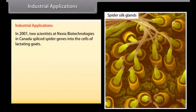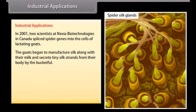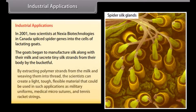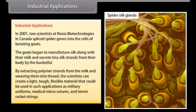In 2001, two scientists at Nexia Biotechnologies in Canada spliced spider genes into the cells of lactating goats. The goats began to manufacture silk along with their milk and secrete tiny silk strands. By extracting polymer strands from the milk and weaving them into thread, the scientists created a light, tough, flexible material that could be used in applications such as military uniforms, medical micro-sutures, and tennis racket strings.